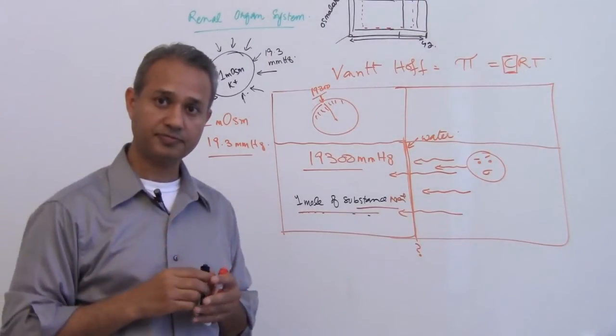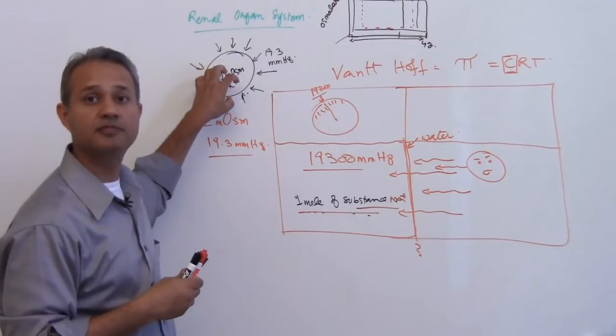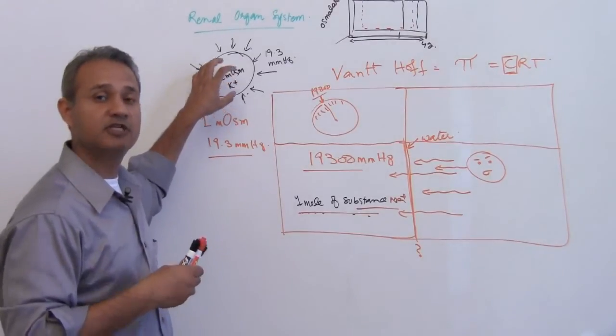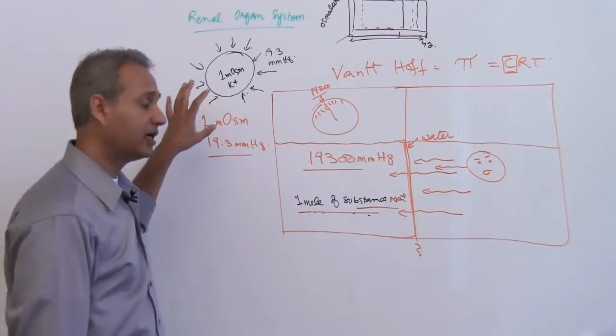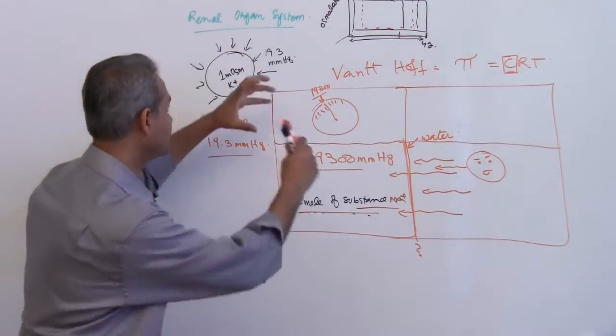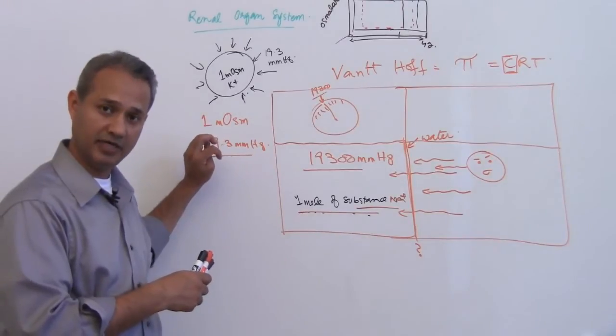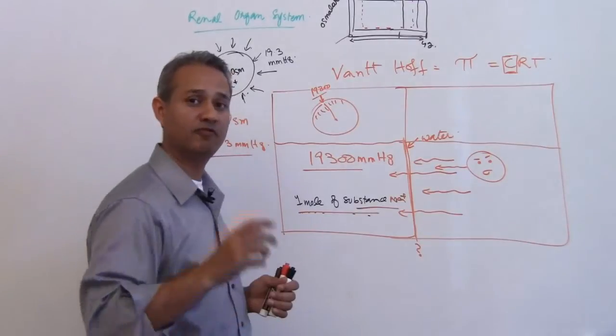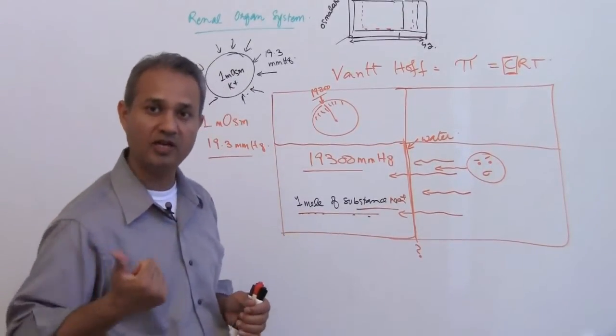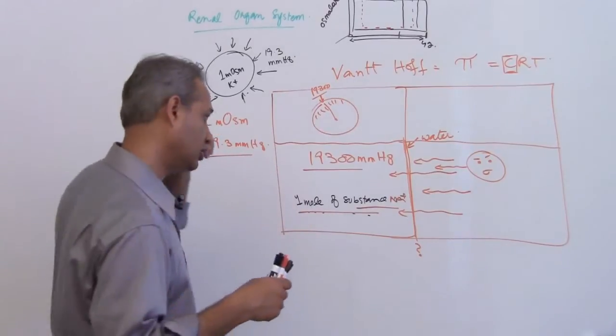If the membrane is permeable, water is going to go in. If it is semi-permeable for water, it would go in. But if it is not permeable, then the pressure will be exerted but water will not be able to get in. Non-permeable means it would not work, semi-permeable means water can move but other things cannot, and permeable means everything can move or the solutes can also move.